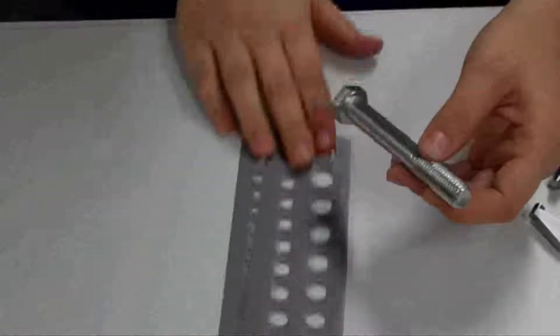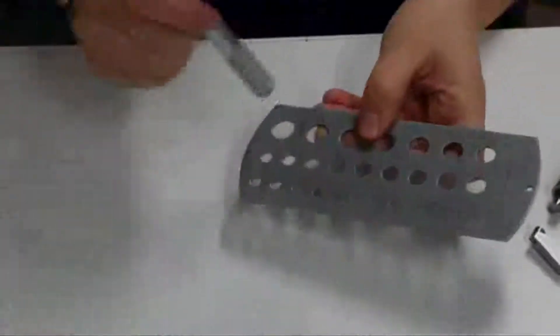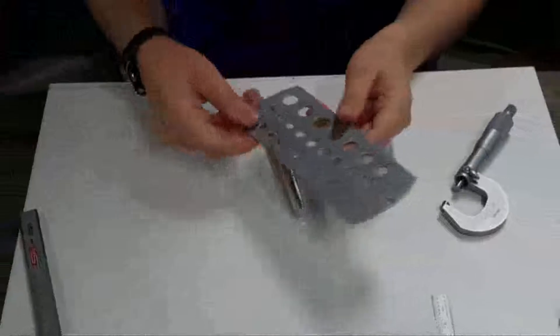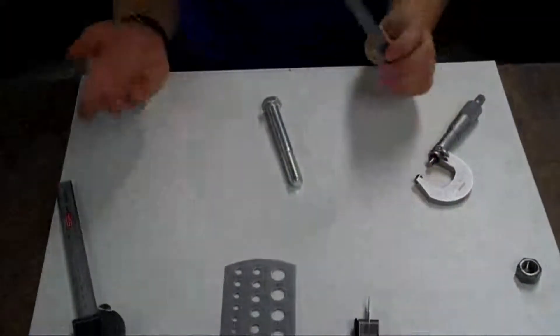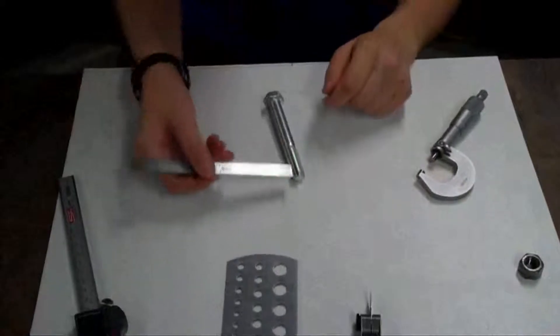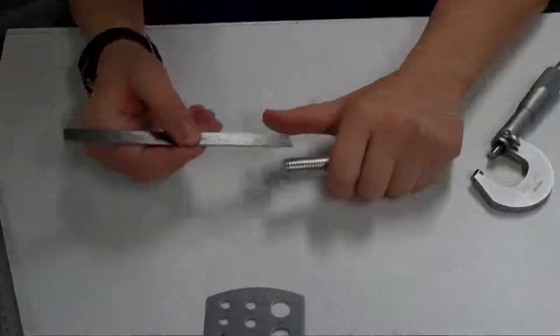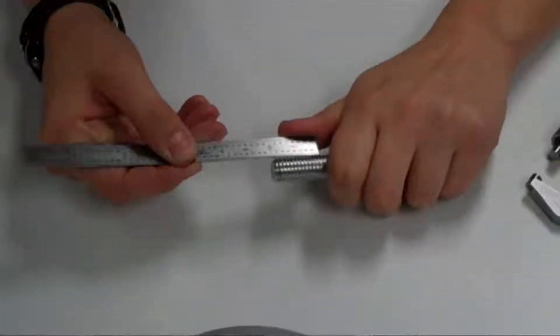You can also use a hole gauge to measure the outer diameter of your bolt. Second, using a ruler, calipers, or pitch gauge or thread gauge determine the number of threads per inch on your bolt. To use a ruler, simply count the number of threads in an inch.